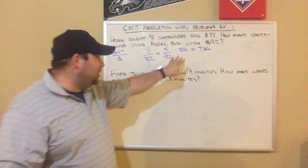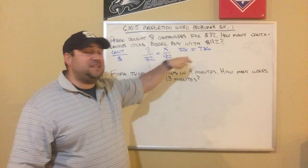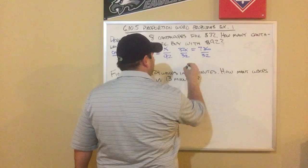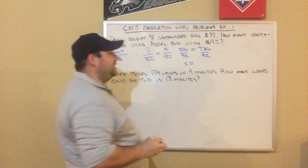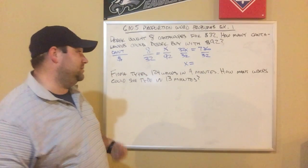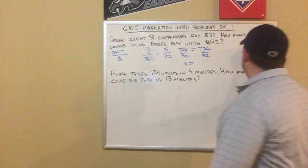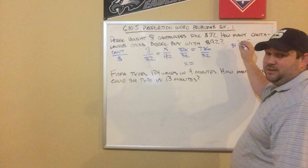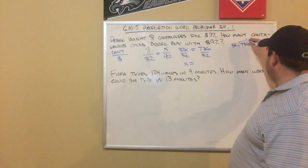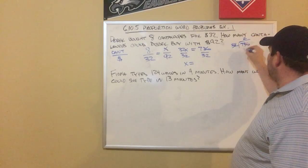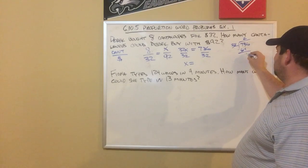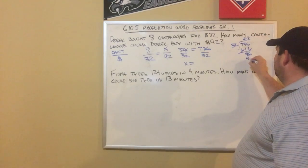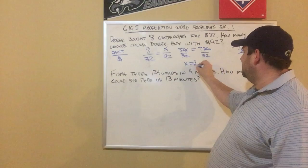Now I just solve this one-step equation. It's 32 times x, so I do the opposite and divide by 32. I need to figure out 736 divided by 32. 32 goes into 73 twice — that's 64. 73 minus 64 is 9, bring down the 6. 32 goes into 96 three times. So I get 23.